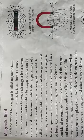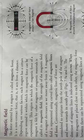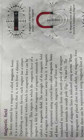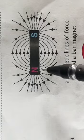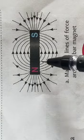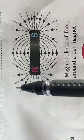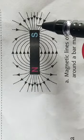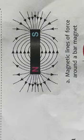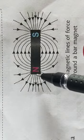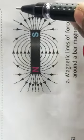The region around the magnet where the magnetic force can be felt is called the magnetic field. This magnetic field is represented using curved lines called magnetic lines of force. The magnetic lines of force originate from the north pole and move toward the south pole, as you can see in the diagram.